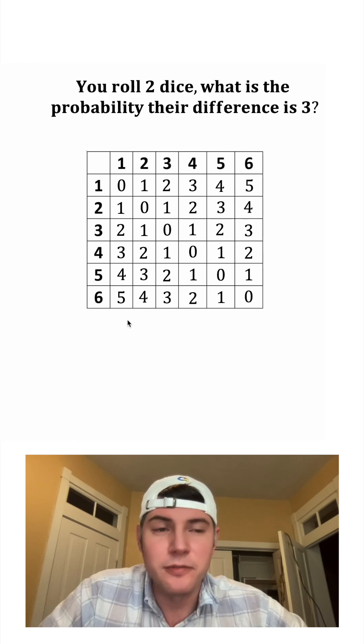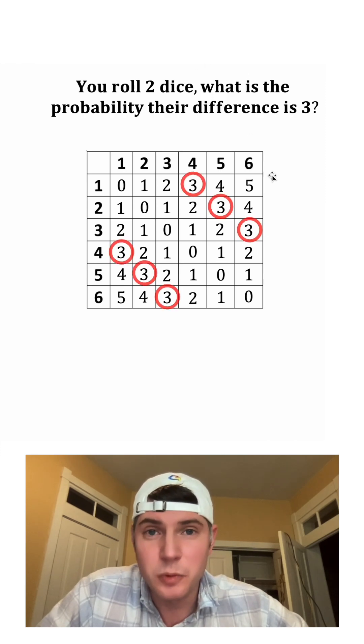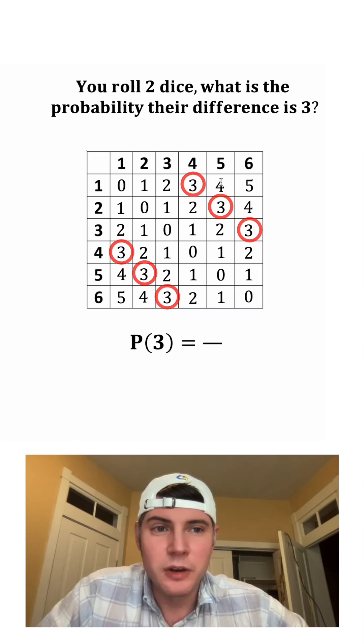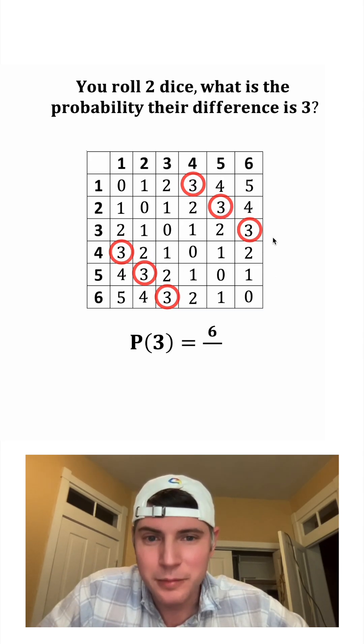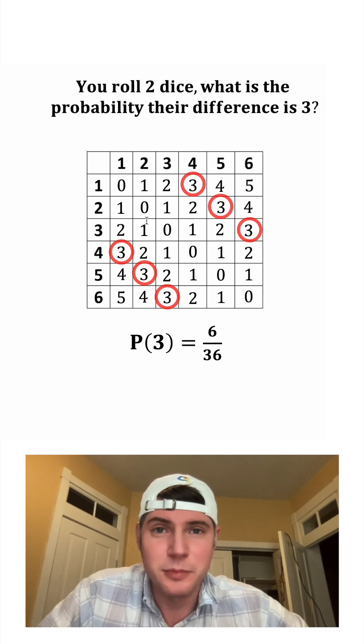There are six scenarios where we have a difference of three. So to find the probability of the difference being three, we're just going to do a fraction. We have the six successful events on top and we have 36 total possible events. And then 6 over 36 simplifies into one sixth.